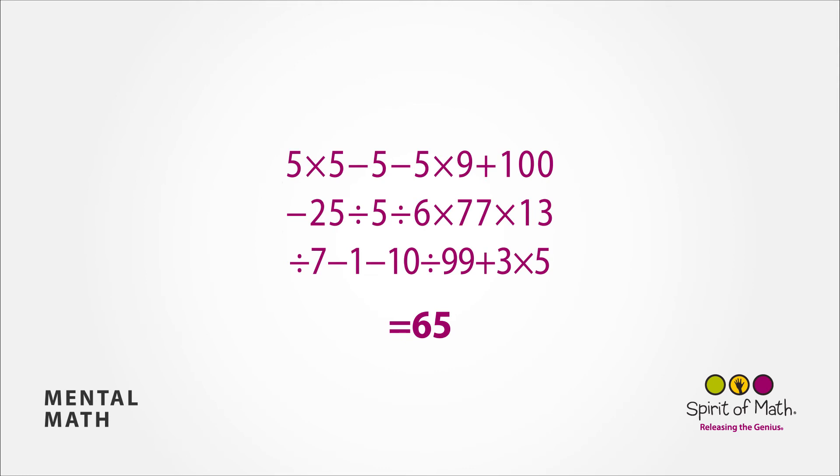Starting at the beginning of the equation, you have 5 times 5 which is 25. Subtracting 5 and then subtracting another 5 gives you 15. Multiplying by 9 is 135 and adding 100 is 235.